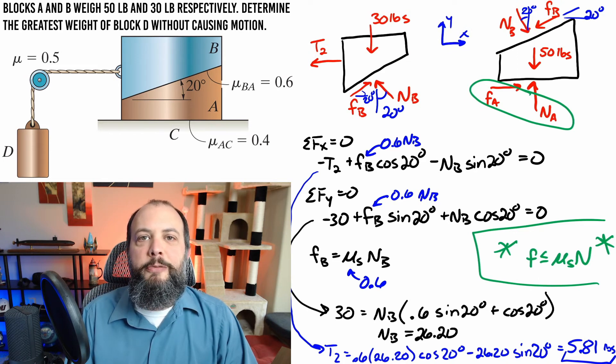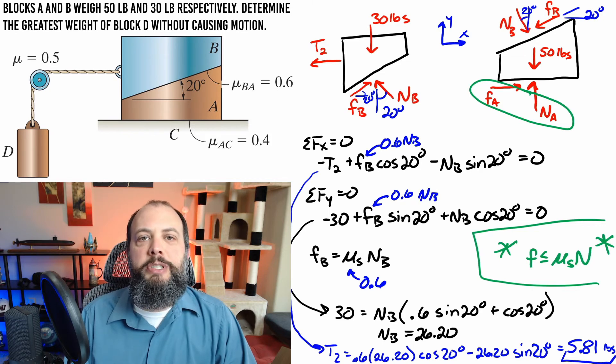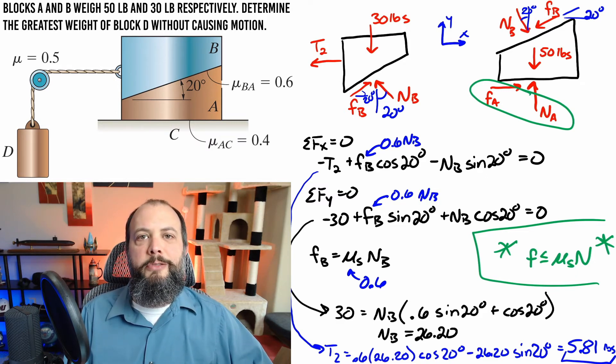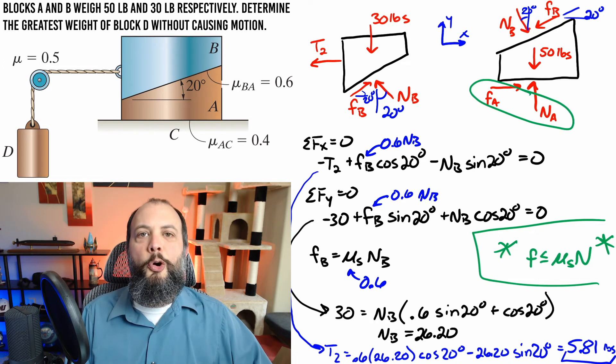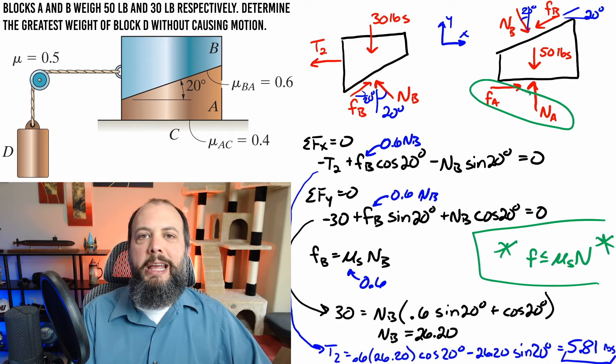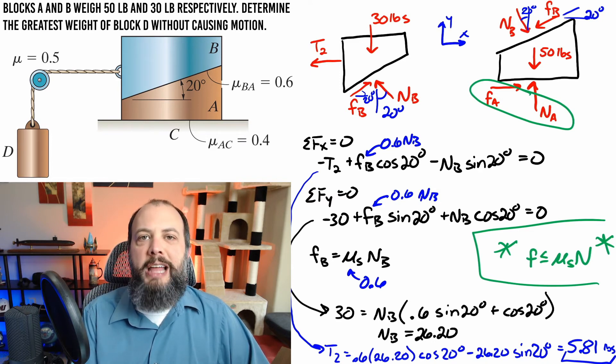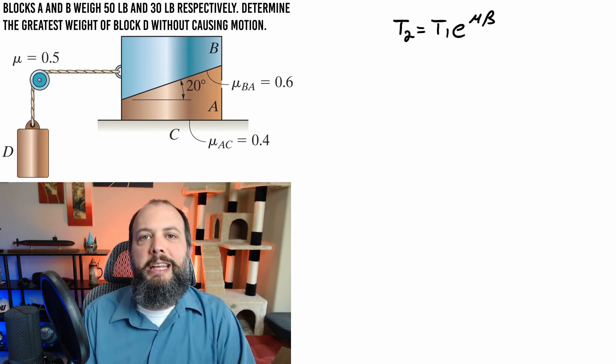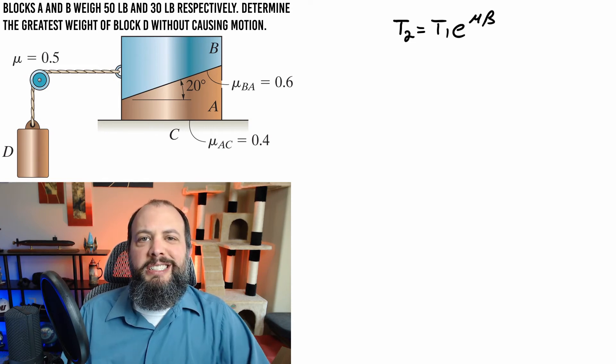So as the last step for this problem we're going to do a belt friction equation in order to find what weight would actually cause 5.8 pounds of tension. Up to this point in this class normally for ropes you've been modeling them as being the same tension on both end of the rope but those have always been cables in straight lines or wrapped around frictionless pulleys. Once you include friction you have to pull even harder on one end to not only resist what's happening at the other end but also to overcome friction happening along the length of the cable.